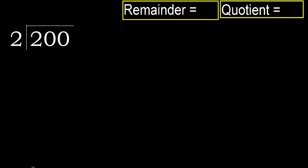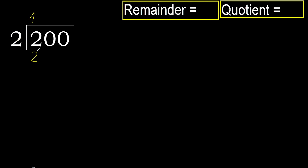200 divided by 2. 2 is not less, therefore with 2. Here, 2 multiplied by which number is nearest to 2 but not greater? 2 multiplied by 2 is 4 — 4 is greater. 2 multiplied by 1 is 2, which is not greater.